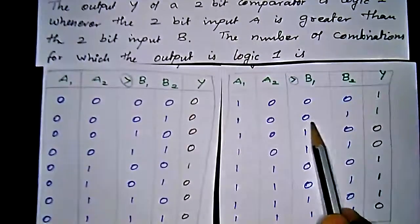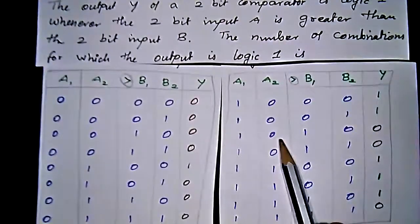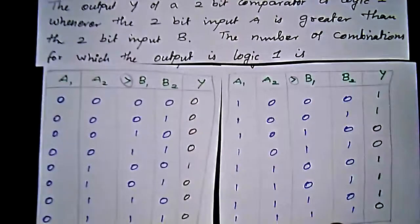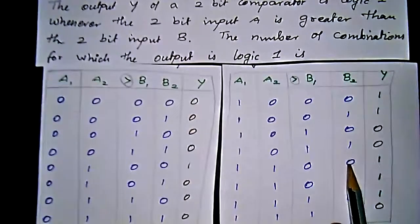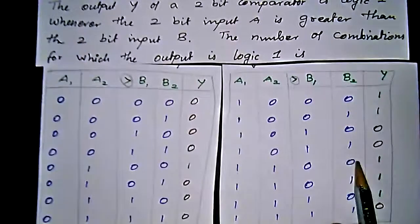For 1, 0, 0, 1 we get 1. For 1, 0, 1, 0 they're equal, so 0. For 1, 0, 1, 1, B is greater, so 0.